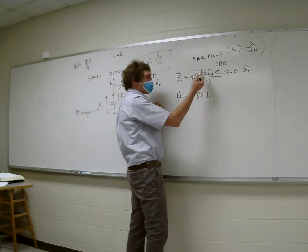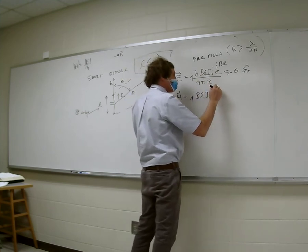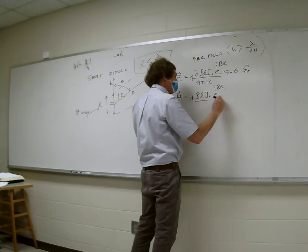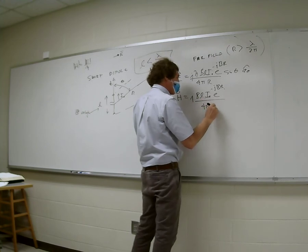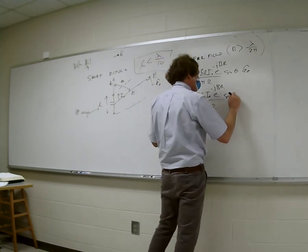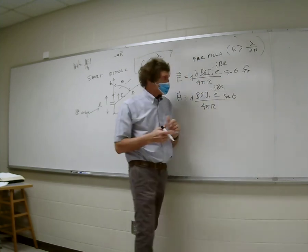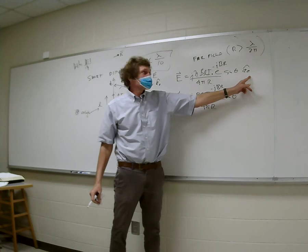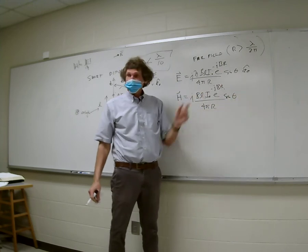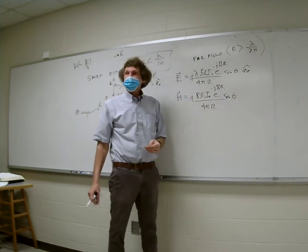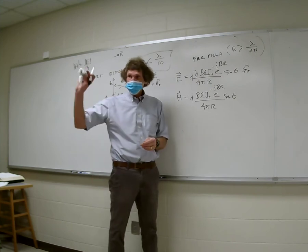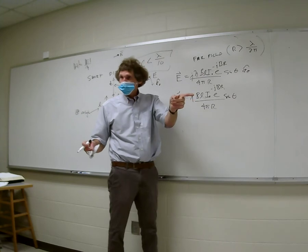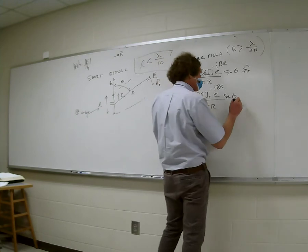For the H field, everything is the same except we get rid of η, and the formula becomes j·β·L·I₀ over 4πR times sine theta. But what else changes? Tell me about the angle — is H in the same direction as E? No: H has to be perpendicular to both E and the direction of propagation. E cross H is the direction of propagation times the power density, so H must be in the phi direction.